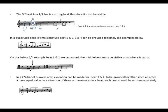This is not correct in 4/4 — the third beat is a strong beat and must be visible. In the correct example: beat 1, imaginary barline, beat 2, imaginary barline, then beat 3 is visible. We can now see where beat 3 starts, compared to the first example where it was grouped with beat 2. In a 4/4 time signature, beat 1 and 2 can be grouped together, and beat 3 and 4 can be grouped together.